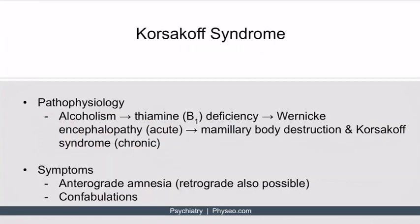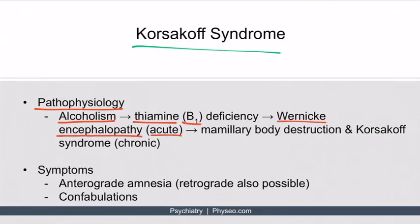A specific type of amnesia is Korsakoff syndrome. The basic pathophysiology: a patient has alcoholism and drinks almost exclusively alcohol. Since they don't get other nutrients, they are deficient in thiamine (vitamin B1). This deficiency can lead to Wernicke encephalopathy, which is an acute condition. Recurrent bouts of Wernicke encephalopathy can lead to mammillary body destruction and Korsakoff syndrome — which you can think of as the chronic version of Wernicke encephalopathy.